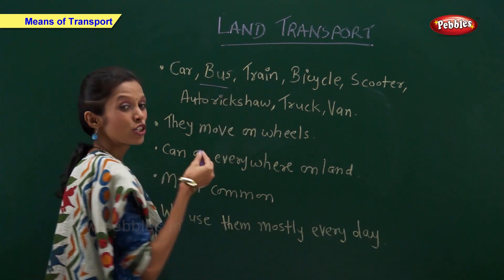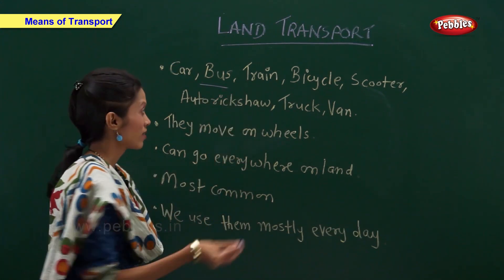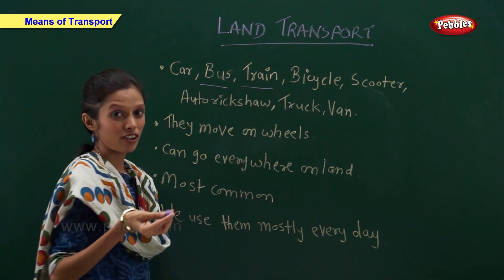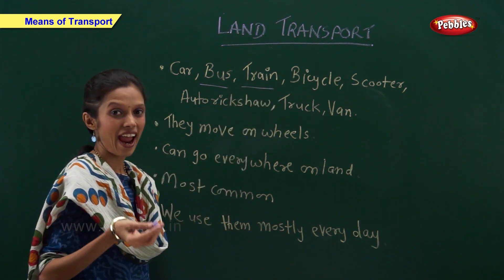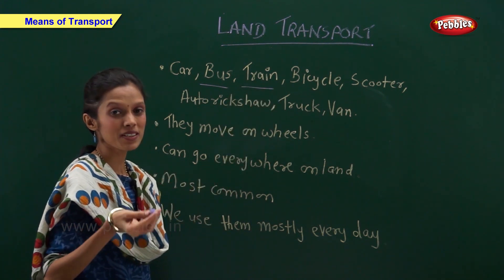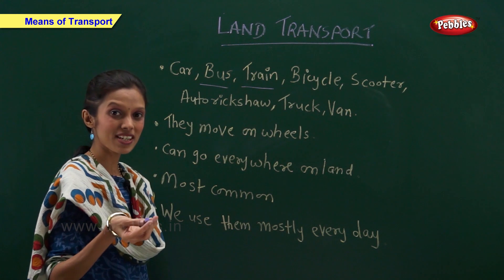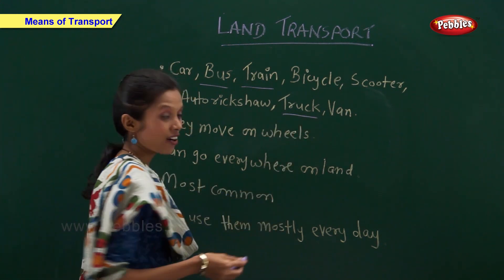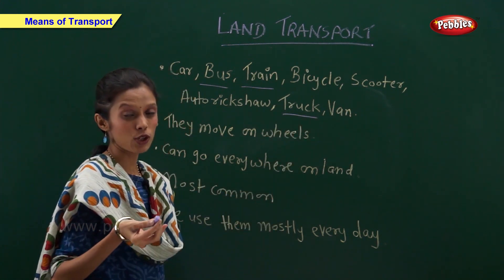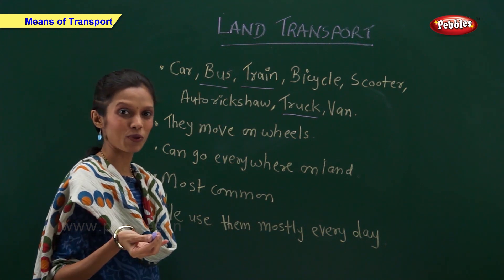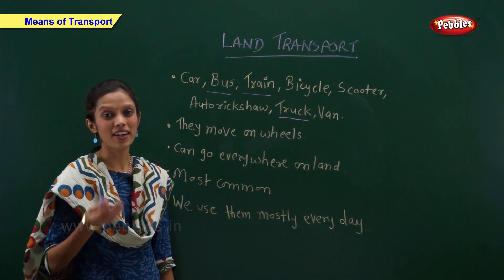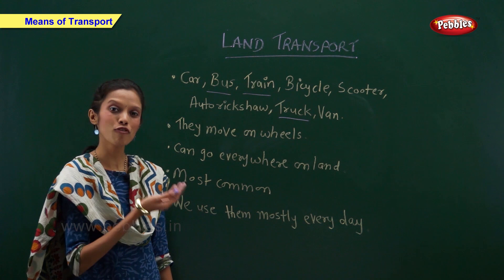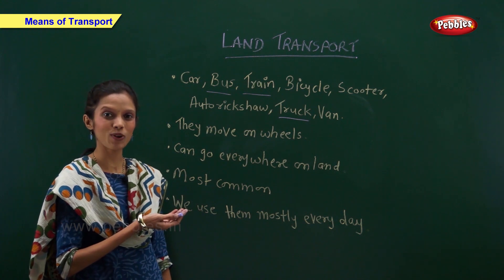Bus stops at a bus stop. Train runs on a railway track and it stops at a railway station. Truck is mainly used for goods transport. Now let us take a look at some of the examples of land transport.